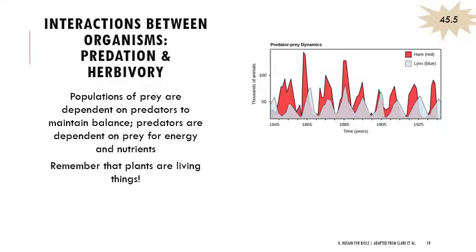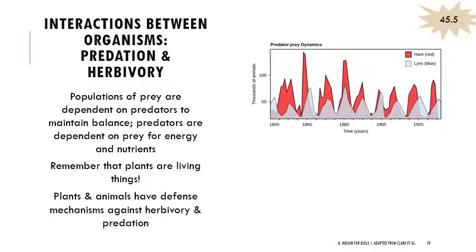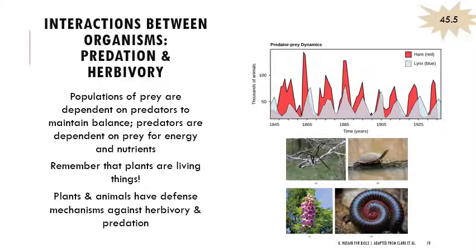Herbivory is a relationship between organisms that eat plants and the plants themselves — remember that plants are living things. Plants and animals have defense mechanisms against both herbivory and predation. Plants produce many cool secondary metabolites and physical defenses like thorns to prevent animals from eating them. Animals have defenses like turtle shells and insects coiling up to protect against predators.